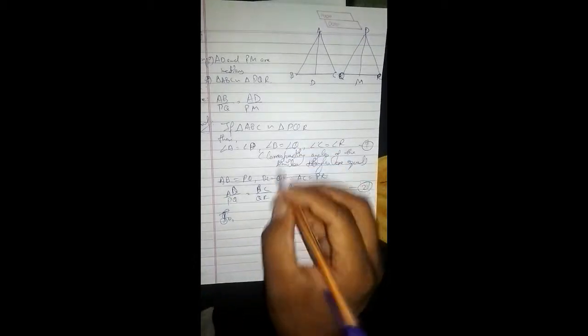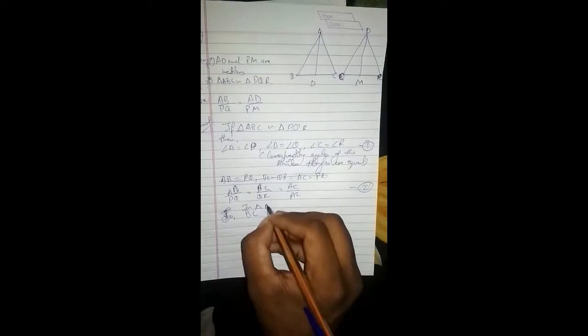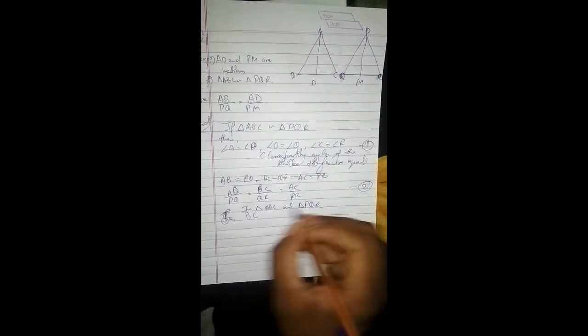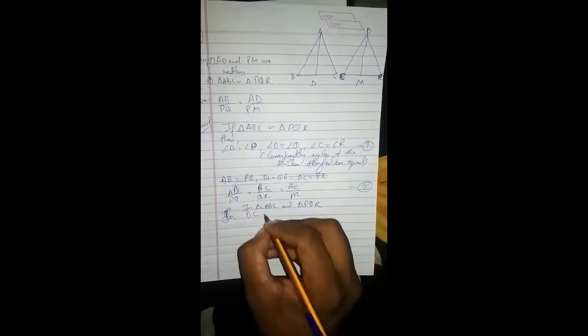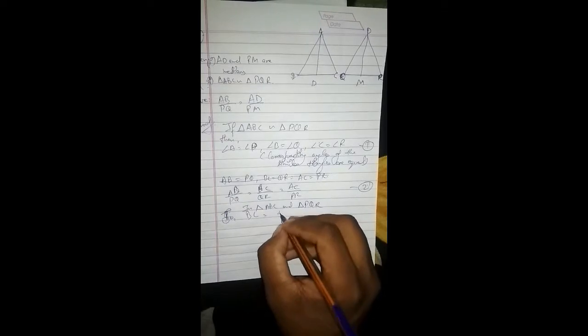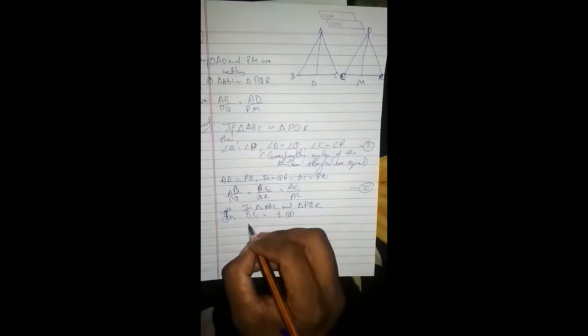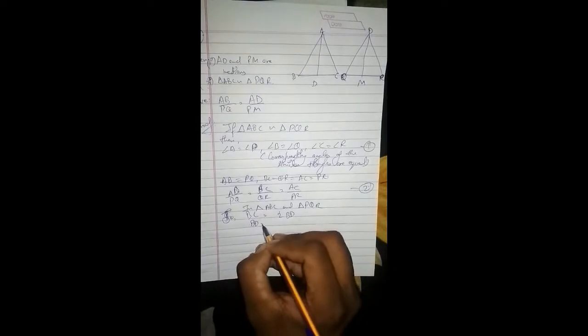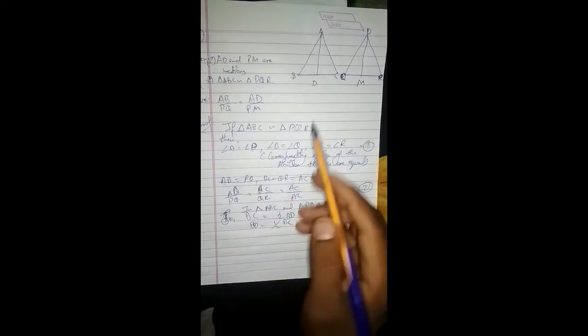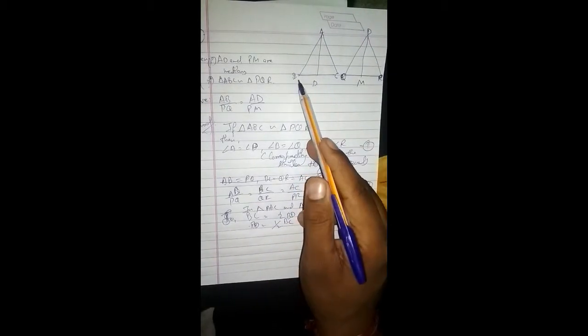So in triangle ABC and triangle PQR, BC we can write as half, 2 times BD. Similarly, BD is equal to one half of BC.